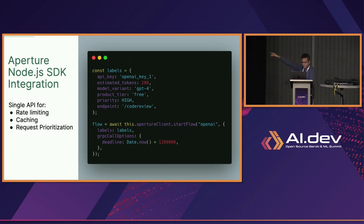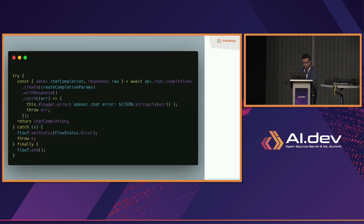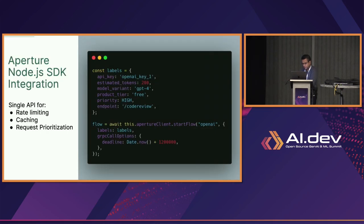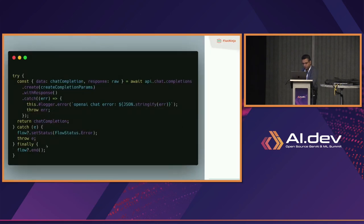After defining the labels, step two is wrapping your workload — in this case the OpenAI call — in a start flow and end flow call. You have a chat completion wrapped with a start flow call and an end flow call. That's it. Aperture then takes care of prioritization, scheduling, and caching.